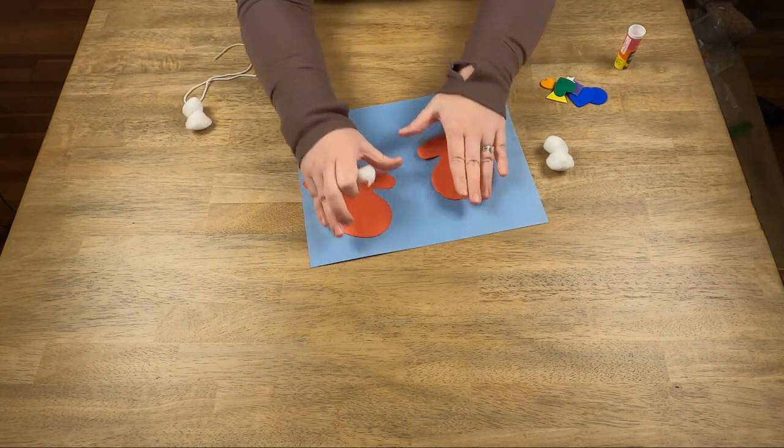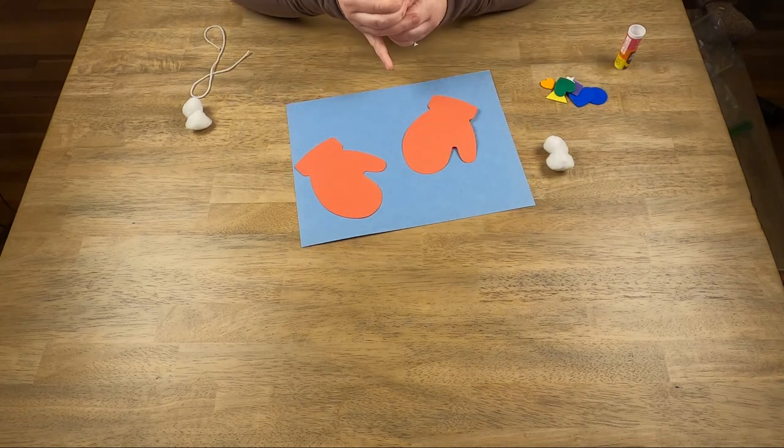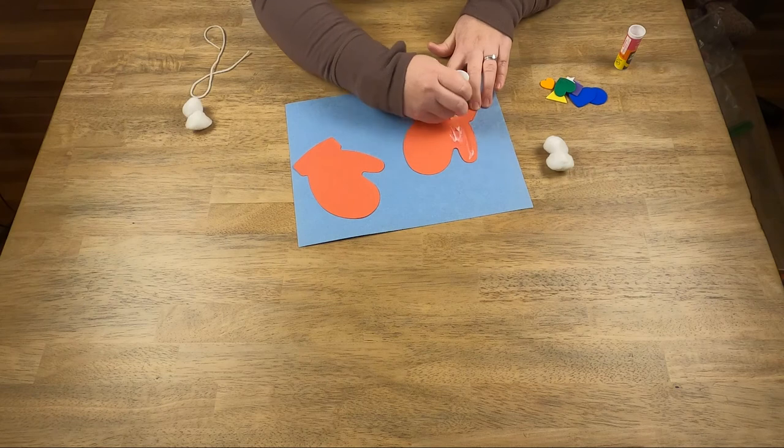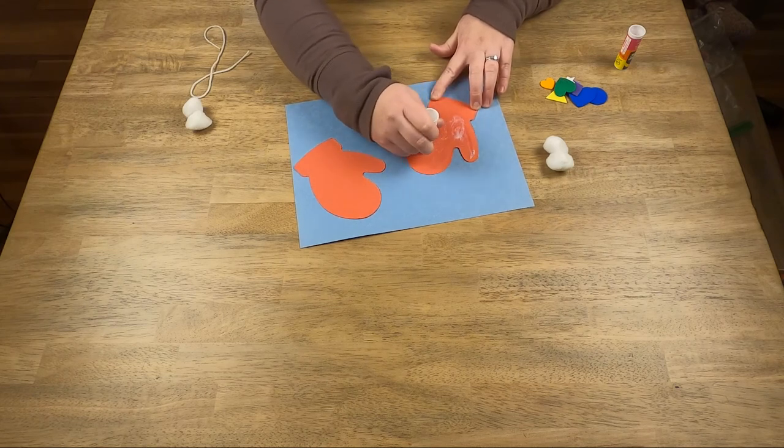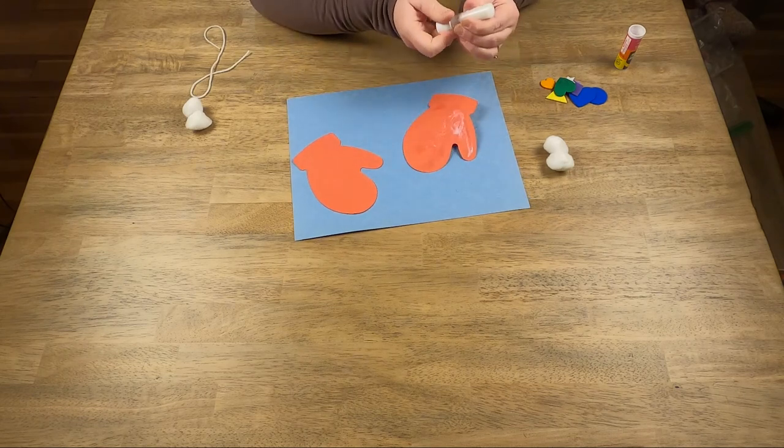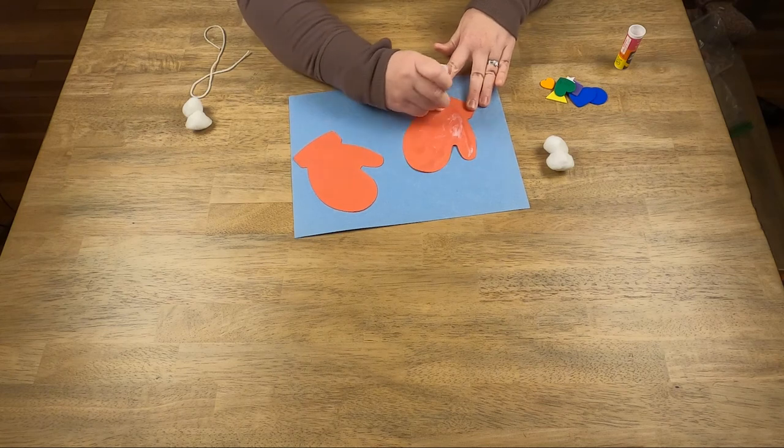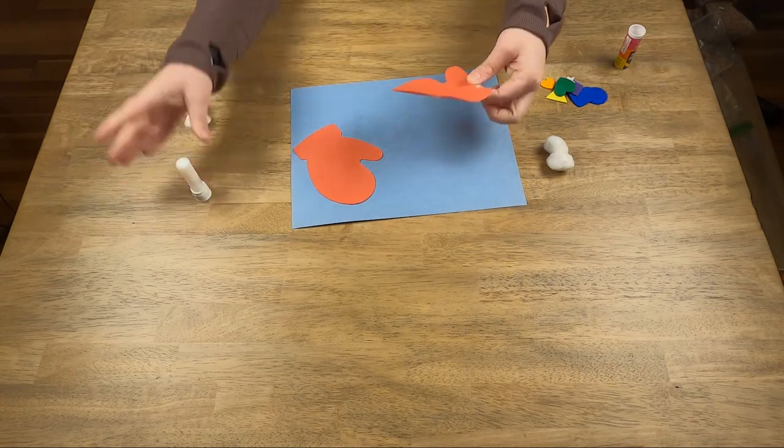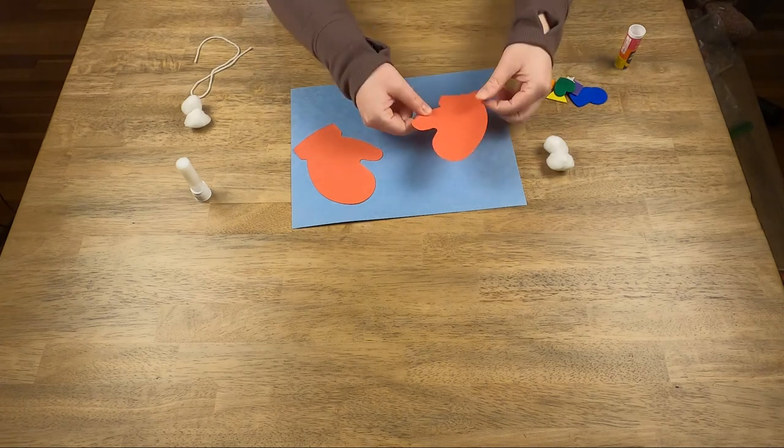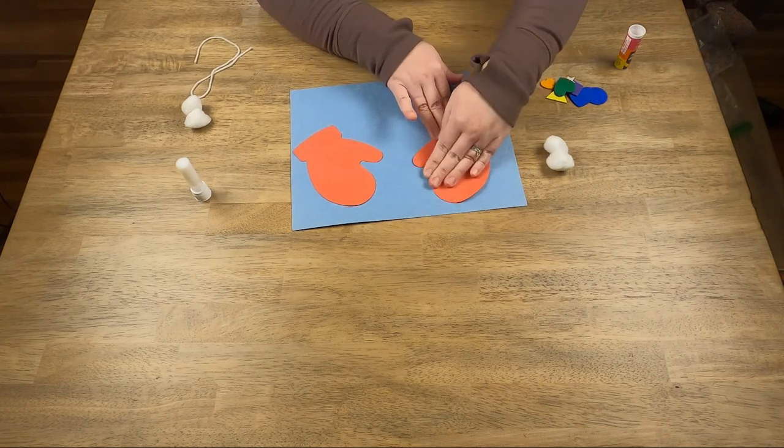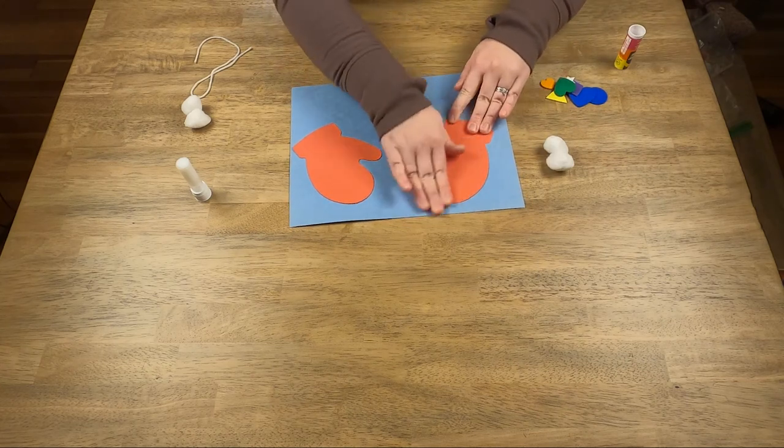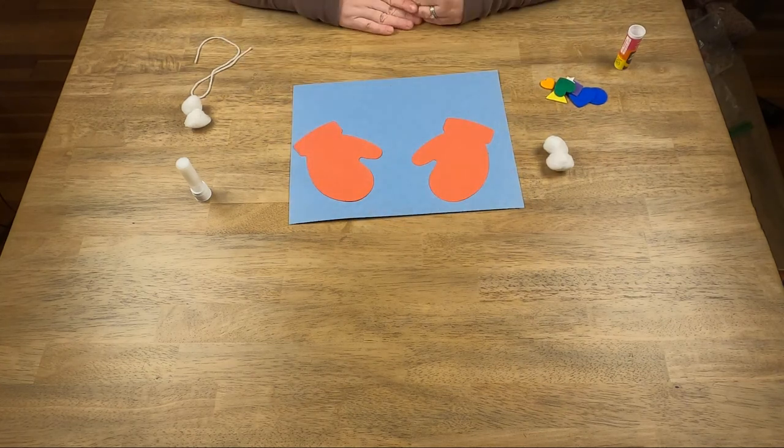Now remember our thumbs face each other, so on the other one we'll flip it over, put some glue on the back, and then I'm gonna place my second mitten just like that. Make sure you press it down so that it sticks to your paper. And there's our little mittens.